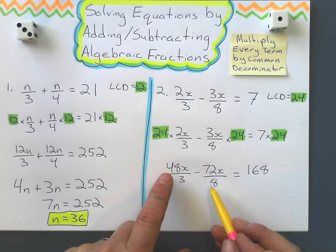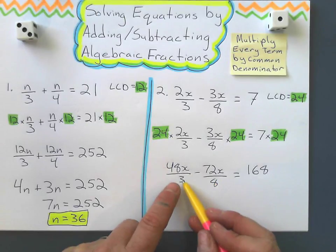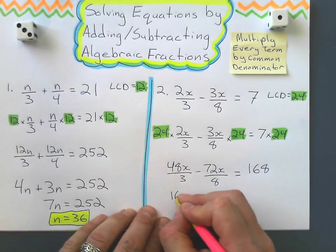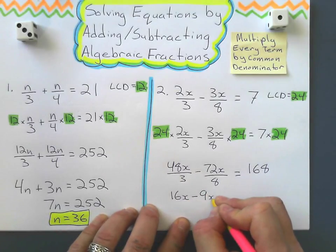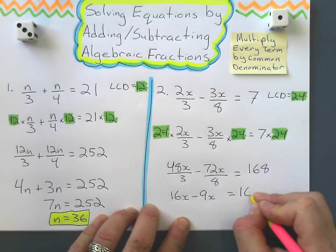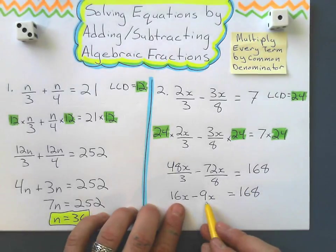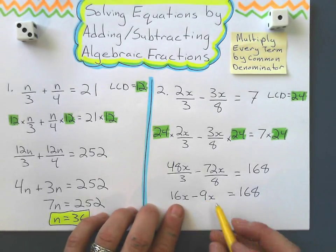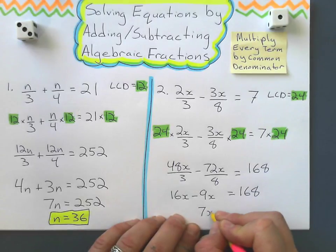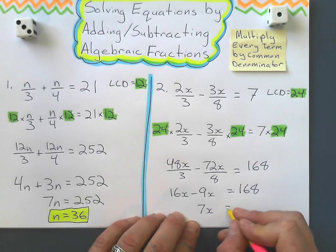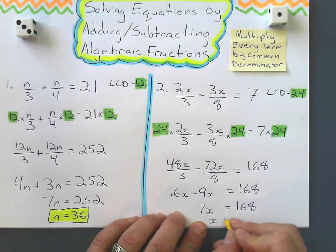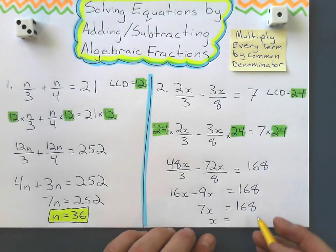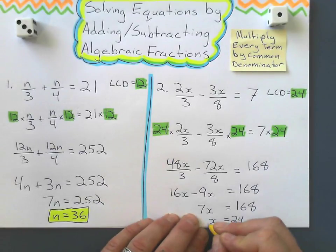Alright, and I can simplify these, these have to simplify, 48 divided by 3 is 16, 16x, 72 divided by 8 is 9x, and now it doesn't become that hard. 16x take away 9x gives me 7x, 7x equals 168, and I divide by 7 again, just like the previous problem, and I get my solution of 24.